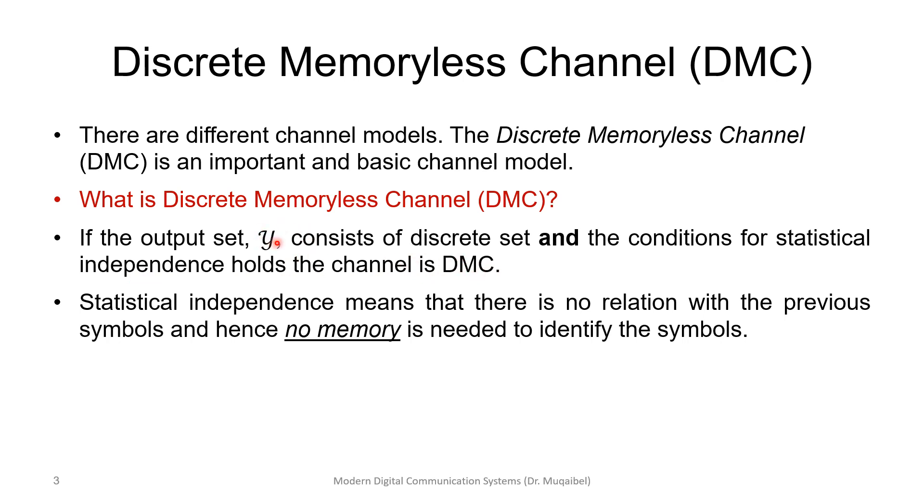If the output symbols or discrete outputs are independent, there is no memory, we call it discrete memoryless channels. Statistical independence means that there is no relation with the previous symbol, and hence no memory is needed to identify the symbols, and hence the name discrete memoryless channel.